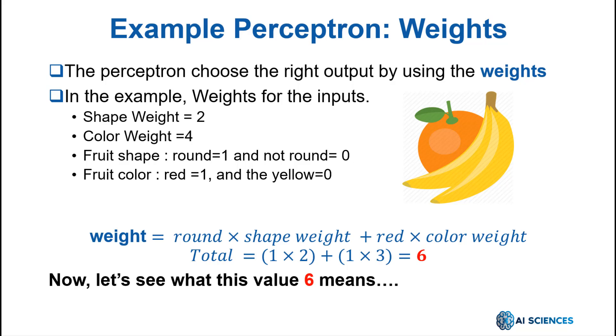Now, how does the perceptron calculate the output? It simply multiplies the input with its respective weight and sums up all the values it gets from all the inputs. Let's consider that we have two shapes: round and long. If the shape is round, the input one value is one, and if it's not round, the value is zero. We'll repeat the same thing with the color. Red takes the value of one, and the yellow color the value of zero. Based on this information, if the fruit is round and red, our perceptron would do the following calculation: Total equals round times shape weight plus red times color weight. So, total equals 1 times 2 plus 1 times 4 equals 6. This calculation is known as a linear combination.